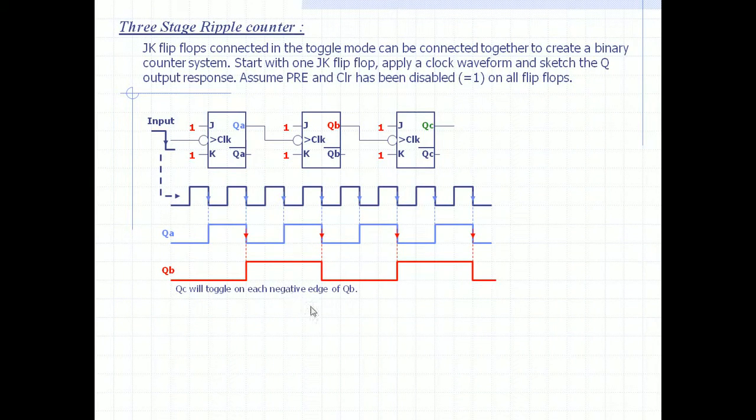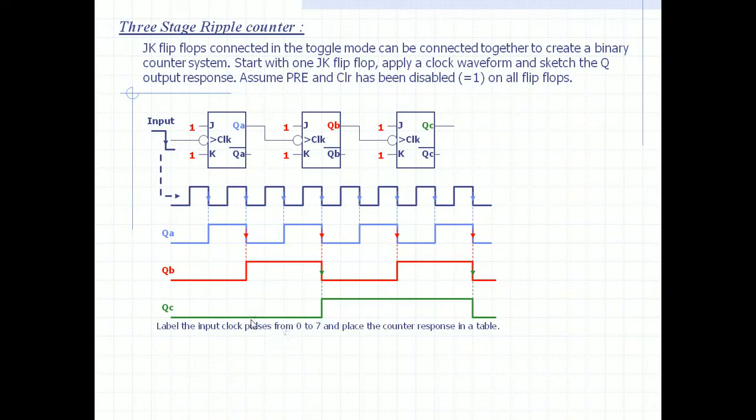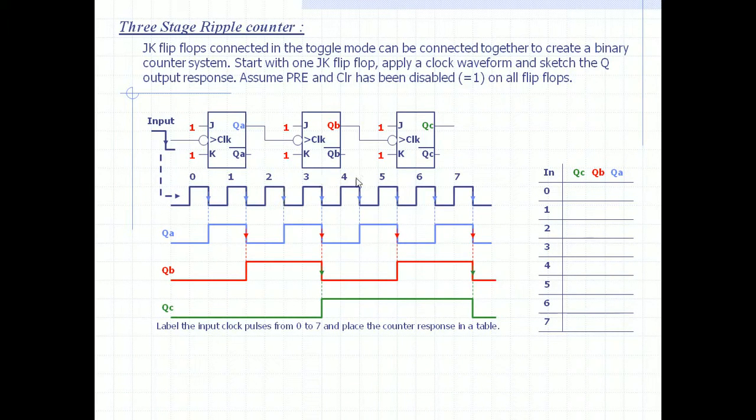QC will toggle on each negative edge of QB. This falling edge, shown in green, will trigger this toggling. Now label the input clock pulses from zero to seven and place the counter response in a table. This is zero, one, two, three, four, five, six, seven. Let us write the outputs in the form of a table.